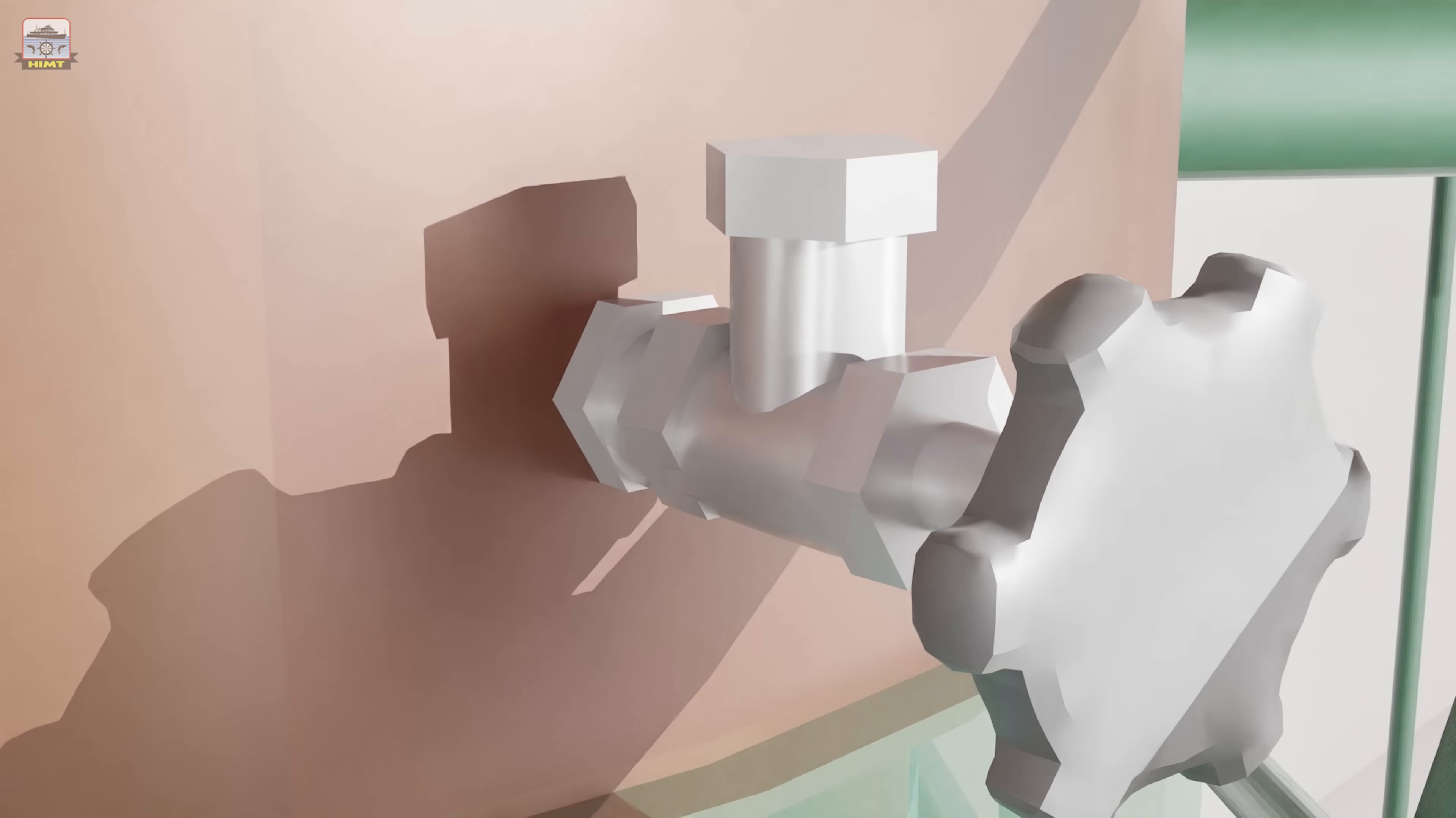The cylinder head also accommodates indicator cock. This is used for blowing through function before starting the engine and also to get the parameters such as peak pressure, compression pressure, scavenge pressure, and combustion characteristics by fitting indicating instruments onto it.